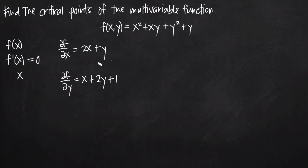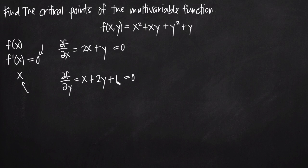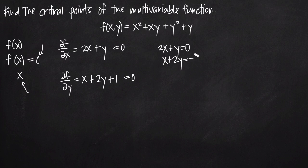Now we have both partial derivatives. We set both of them equal to 0 and solve as a system of simultaneous equations to find values for both x and y — that xy pair will be the critical point. Moving constants to the right-hand side: the first equation gives us 2x plus y equals 0, and the second equation, after subtracting 1 from both sides, gives us x plus 2y equals negative 1.